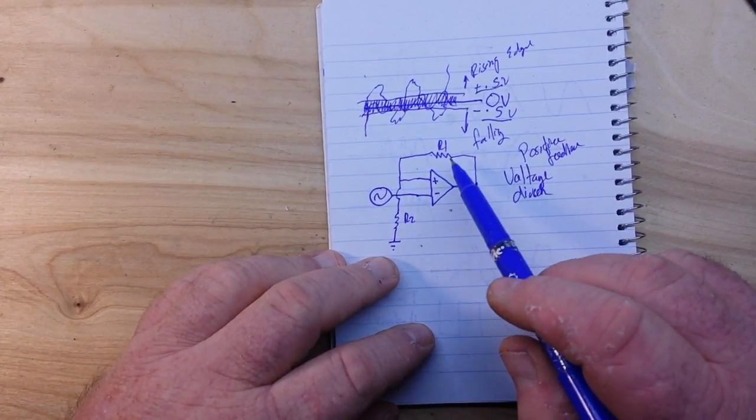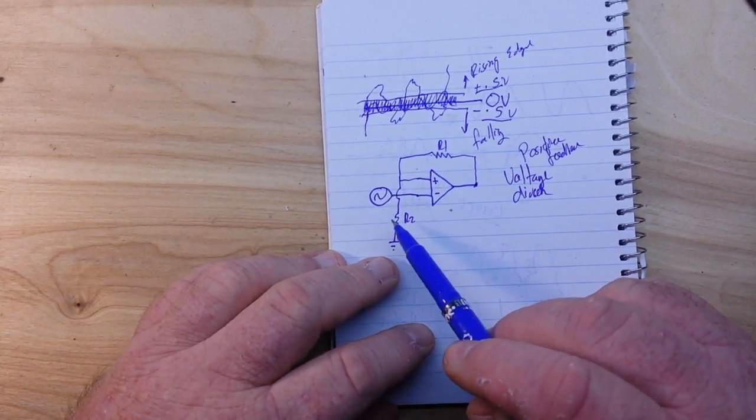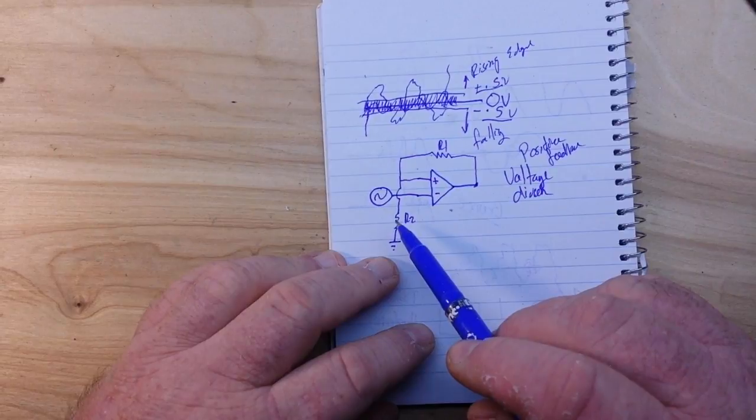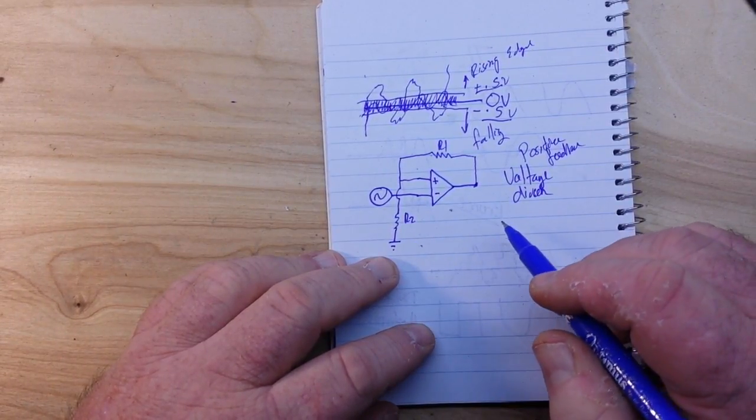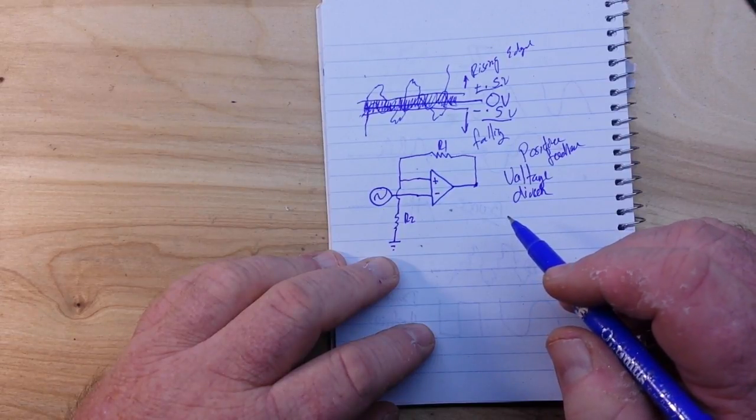So by doing this and figuring out the values of our two resistors and using the voltage divider formula, we can tell what our hysteresis equals.